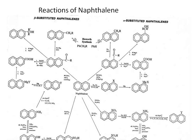For beta-position products: sulfonation at 160°C gives beta-naphthalenesulfonic acid; reaction with NaOH gives beta-naphthol; and beta-naphthol reacted with ammonia gives beta-naphthylamine. So all four derivatives — beta-naphthylamine, beta-naphthol, alpha-naphthol, and alpha-naphthylamine — are synthesized from naphthalene. Friedel-Crafts acylation under vigorous conditions using nitrobenzene as solvent gives acetylation at the beta position; reaction with sodium hypobromite gives naphthalenoic acid, which reduces to alkylated naphthalene.